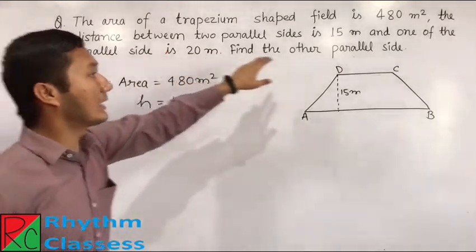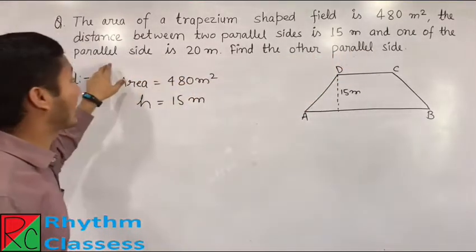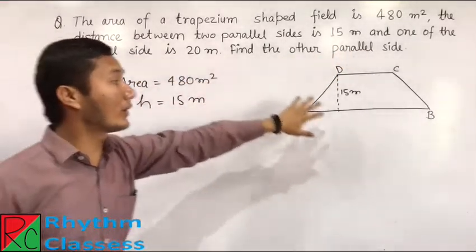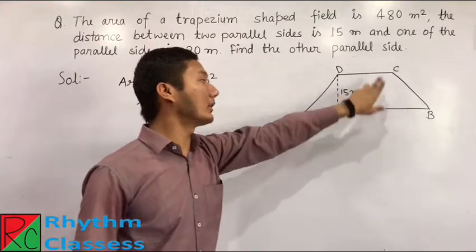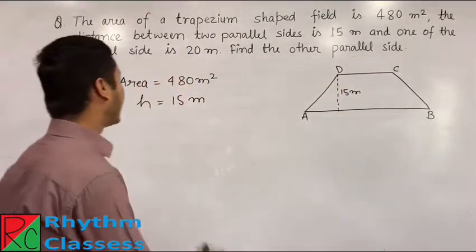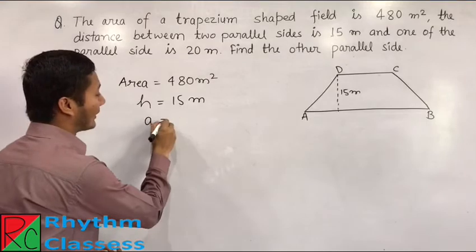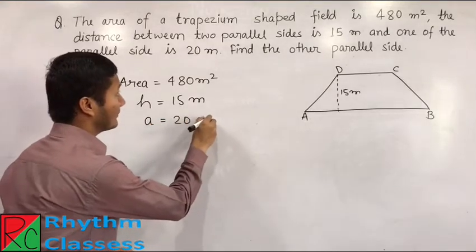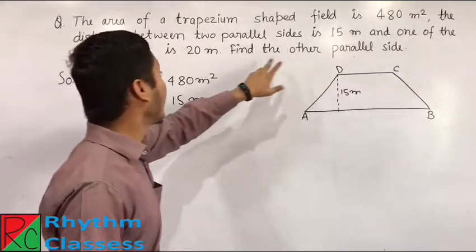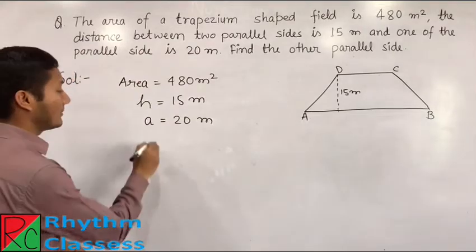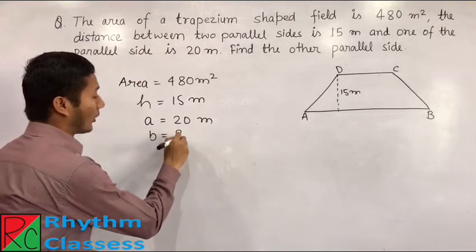Now, what is the next line saying? One of the parallel side is 20 meter. One of the parallel side, either this one or this one parallel side is 20 meter. That means we can say A is equal to 20 meter. Then the question is saying, find the other parallel side. That means we have to find the B.